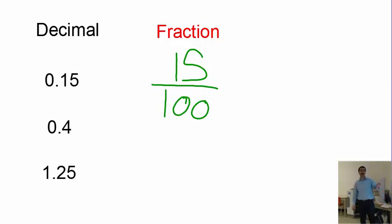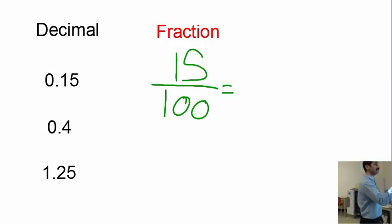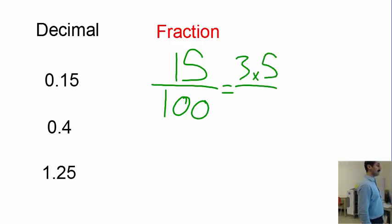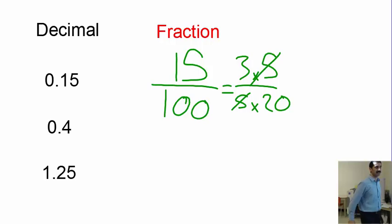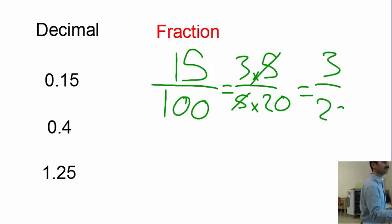But you don't finish there — you need to simplify that fraction. 15 over 100: 15 is 3 times 5, and 100 is 5 times 20. The fives cancel, leaving us with 3 over 20.